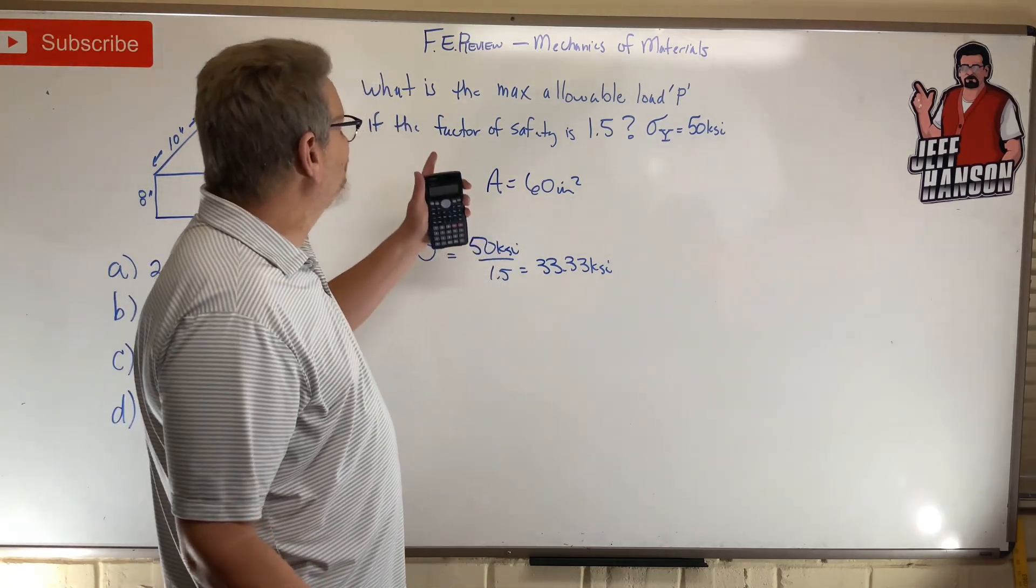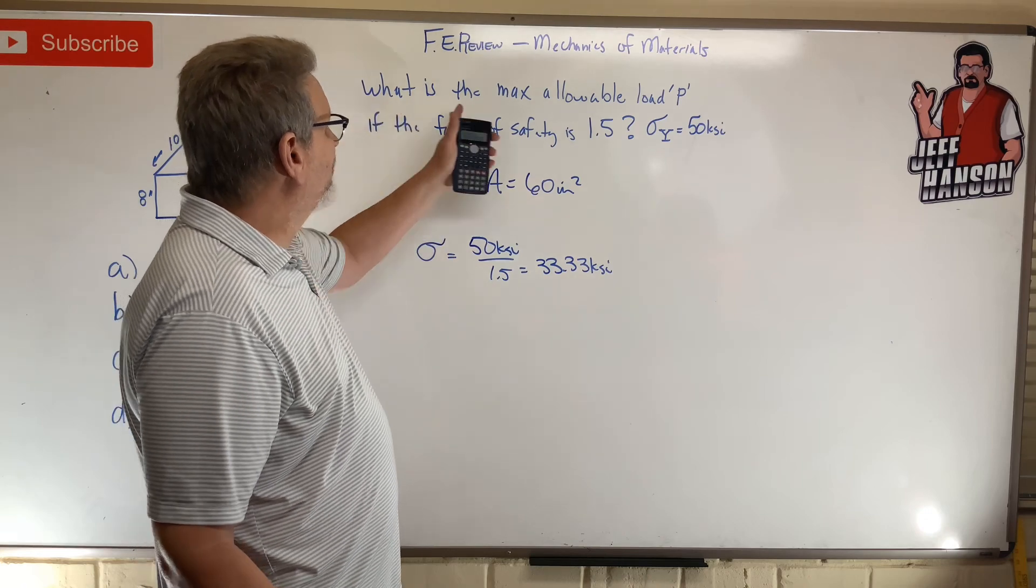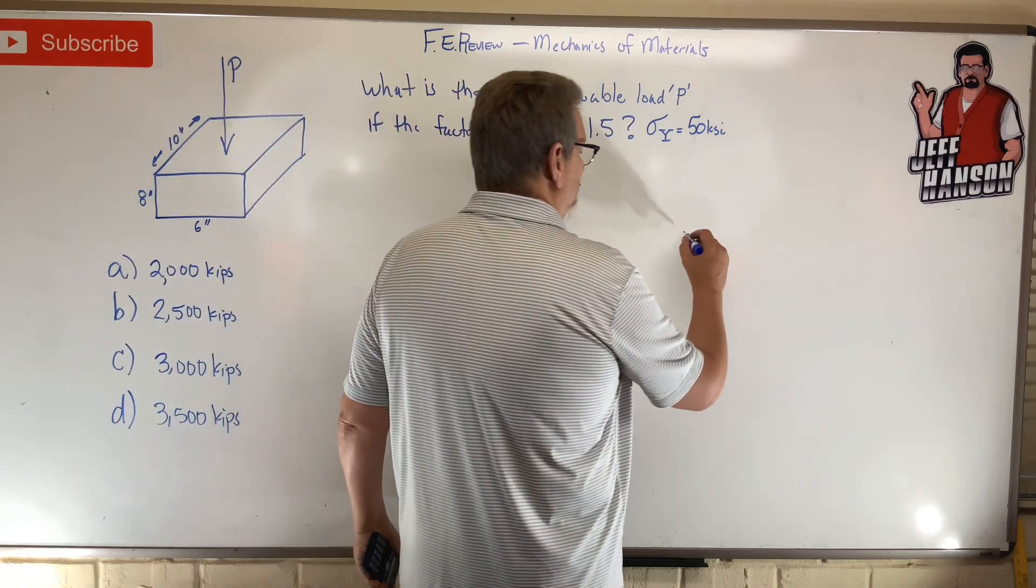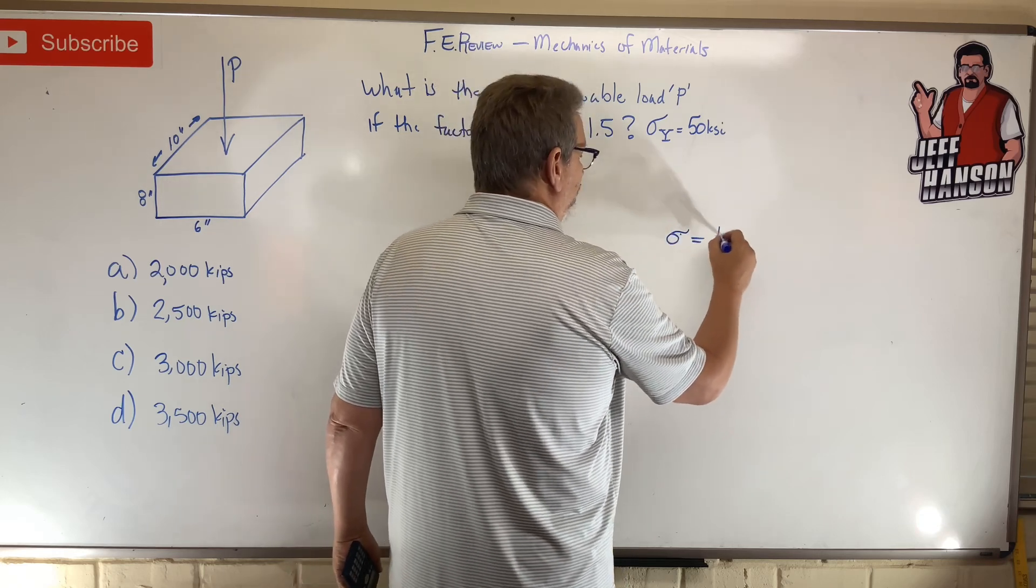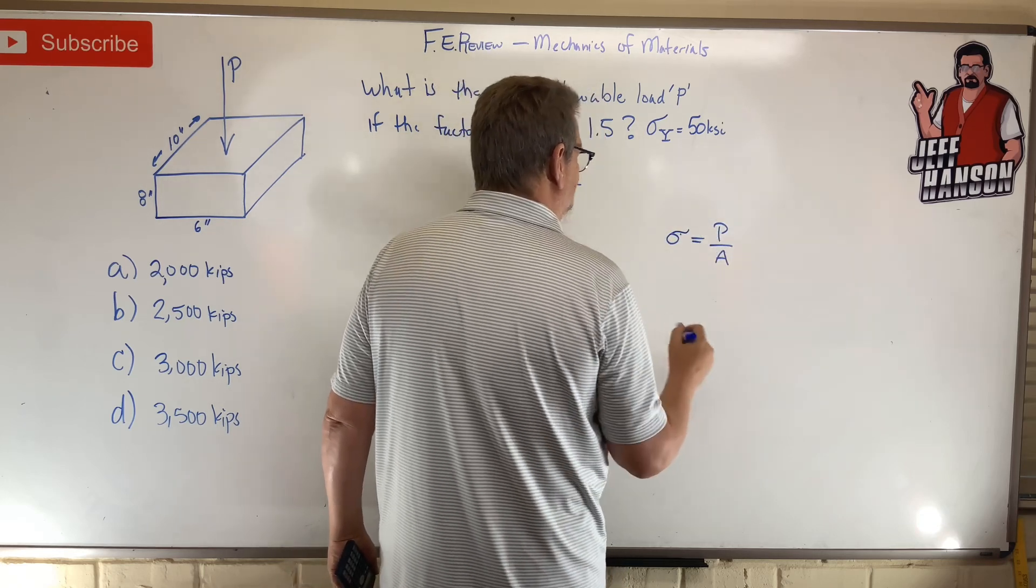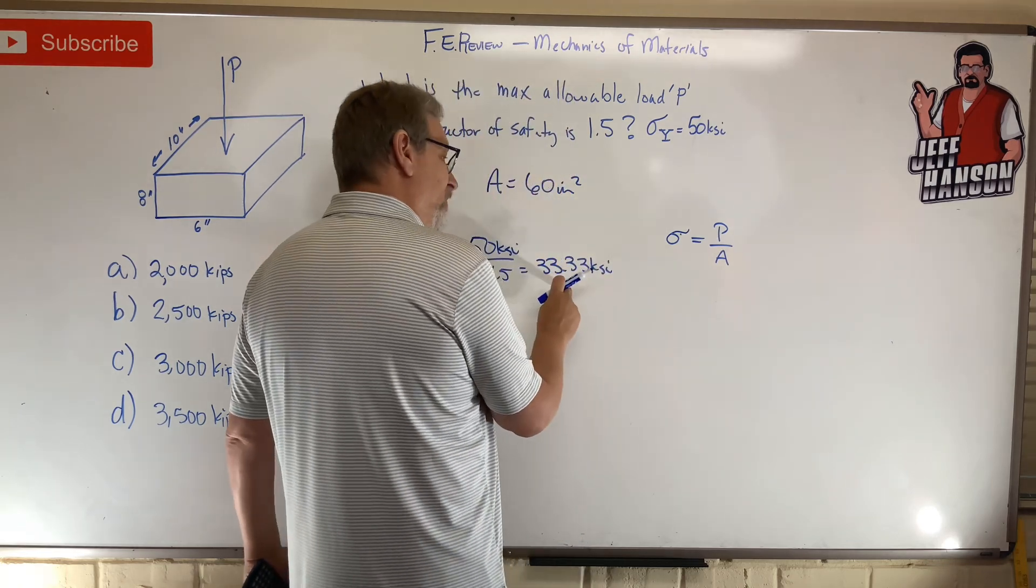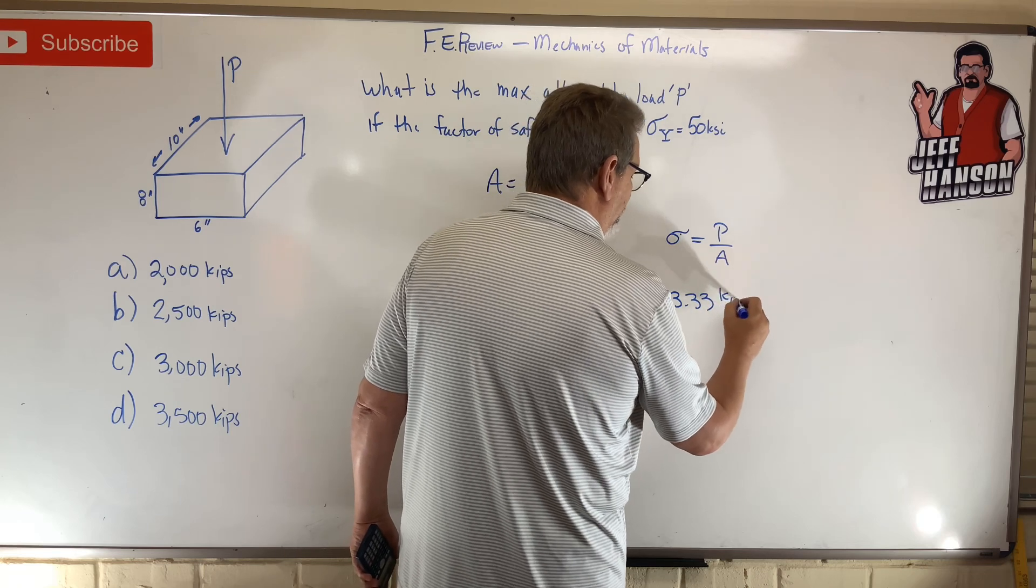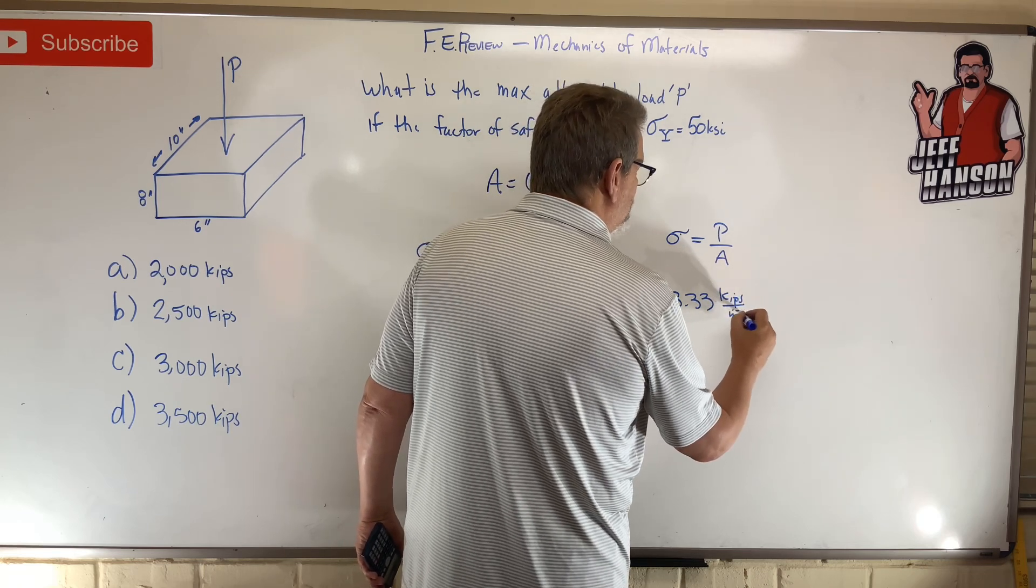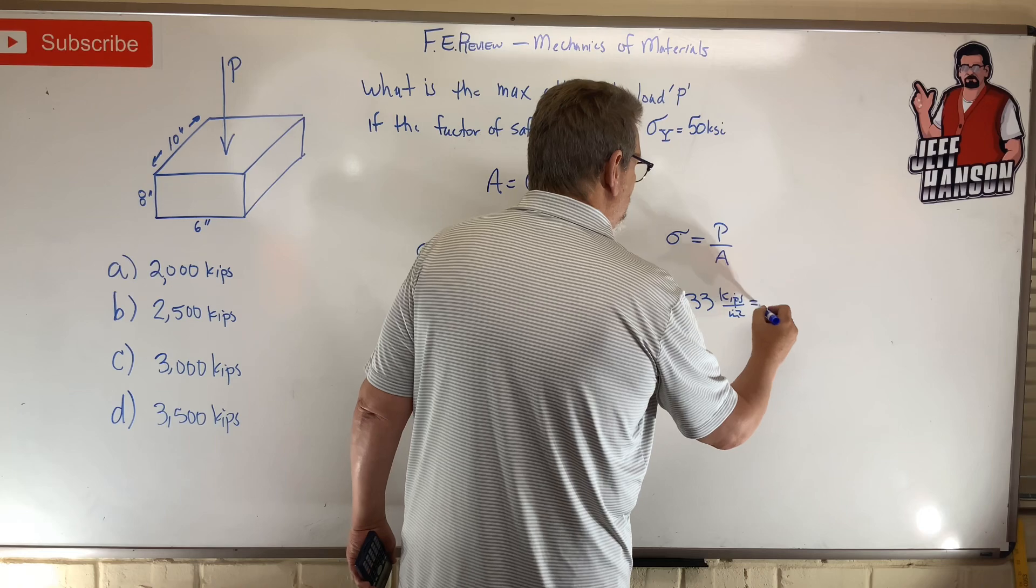What is the maximum allowable P? Well, here you go: Sigma equals P over A. Sigma I know right here: 33.33 kips per inch squared equals P divided by 60 inches squared. Multiply that by that, I'm left with kips. So times 60 equals...